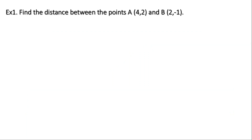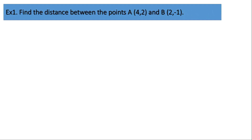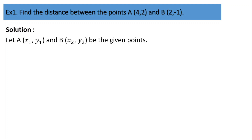Now let's solve one example. The question is: find the distance between the points A(4, 2) and B(2, -1). There are two points given, A and B. Let A be (x1, y1) and B be (x2, y2). So the value of x1 is 4, y1 is 2, x2 is 2, and y2 is -1.